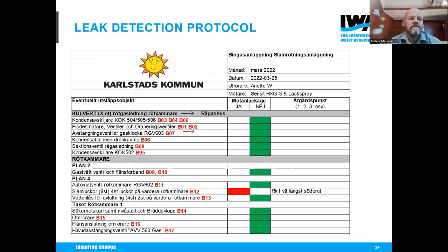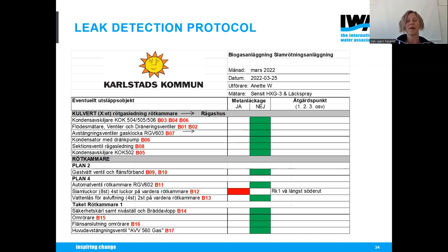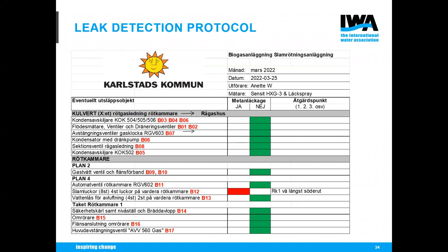Every time we have a restart after a stop, we go through to find leaks and continue until everything is sealed. Leak detection is carried out with a handheld instrument with a semiconductor sensor on a flexible measuring hose. Leak detection spray is also used. We measure at gas couplings, flanges, valves, and sludge hatches.